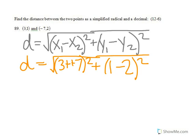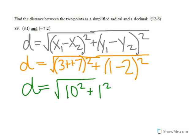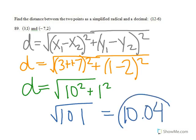So, simplifying even more, that turns into the square root of 10 squared plus 1 squared. And simplifying even more, that is the square root of 101, which equals 10.04. So, that is the distance between the two points.